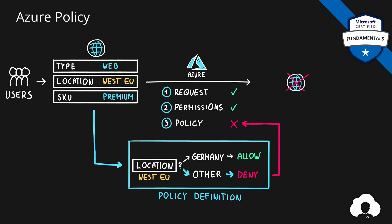When it comes to policy definition, the decision that you make — so either allow, deny, or any other — is called a policy effect. And there are more than just two. So we'll talk about this a little bit later.